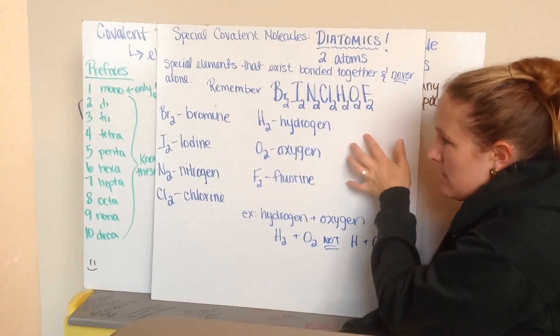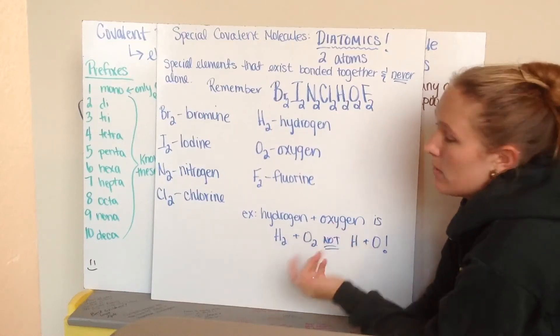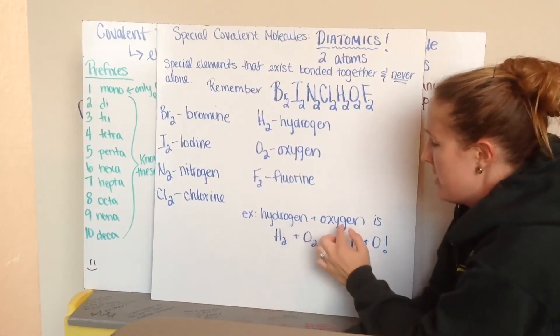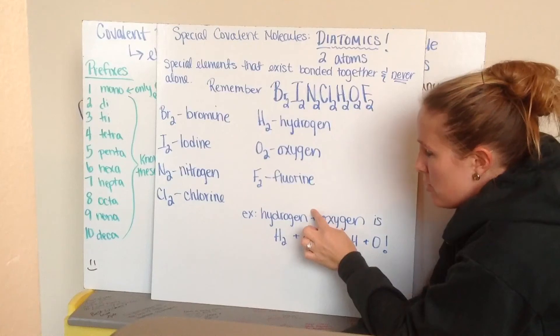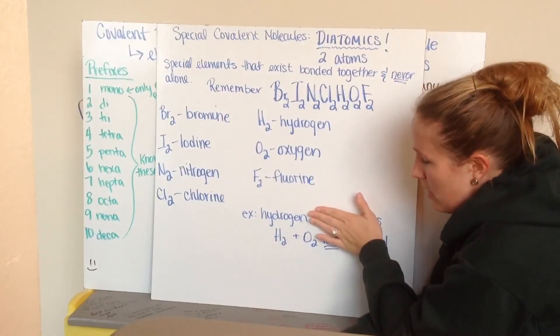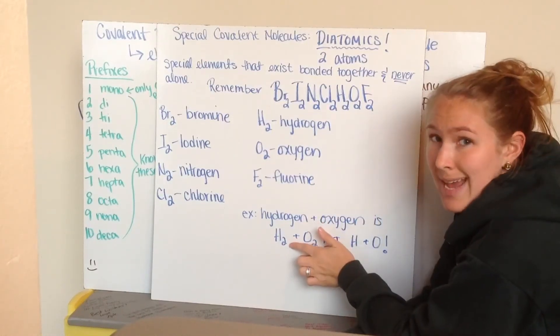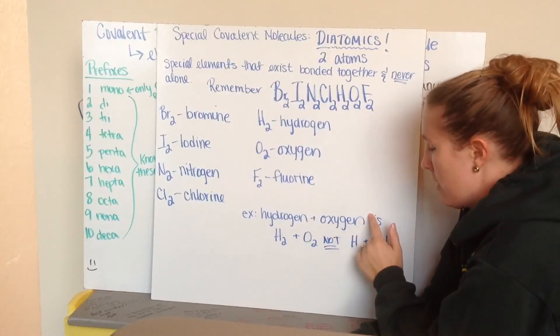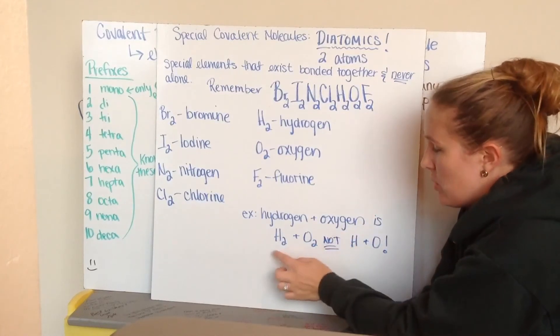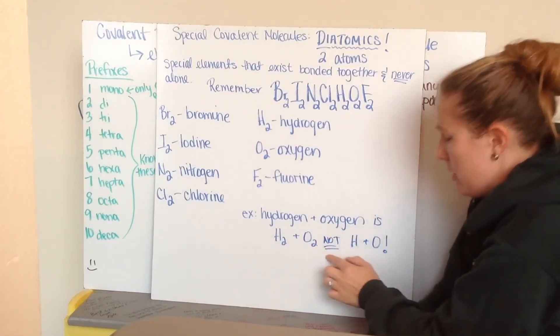So, an example of how this is used in real life. If we were to make water, we would add hydrogen and oxygen together. When we'd write this out, hydrogen, when it's written just by itself, is really H2, not H. Oxygen, written by itself, is O2. So, we'd write H2 plus O2, not H plus O.